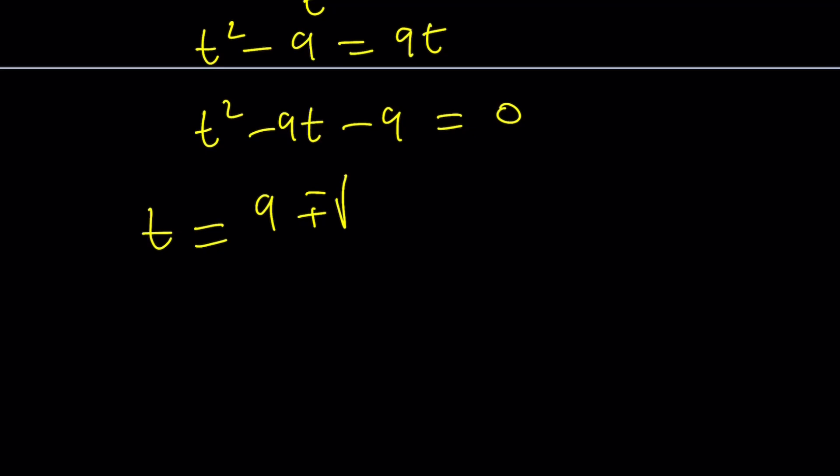So, negative b plus minus the square root of b squared 81 plus 36, which is 117. Divide by 2. 117 is, I think, 13 times 9, right? Yes. So, the square root of 9 is going to be a 3. So, this is 9 plus minus 3 root 13 all over 2.